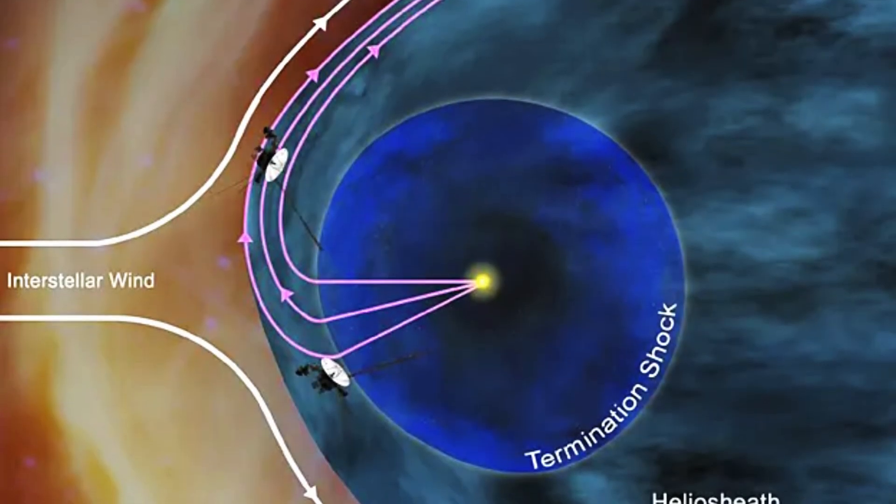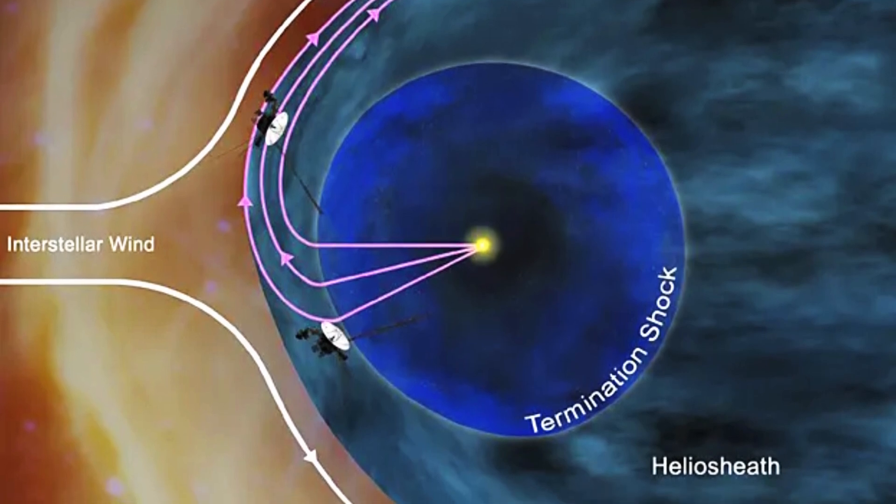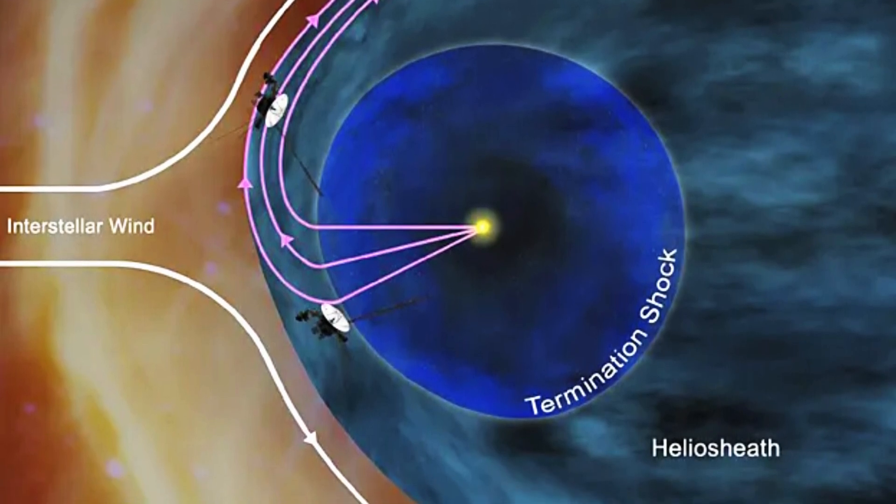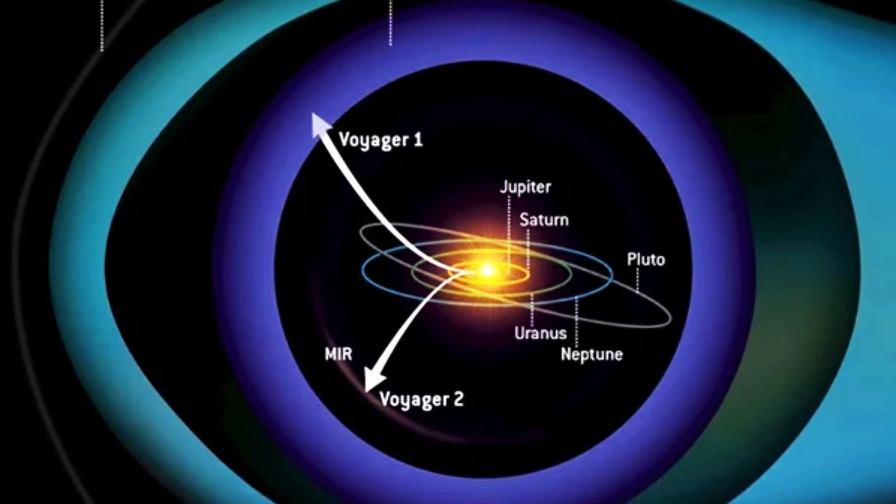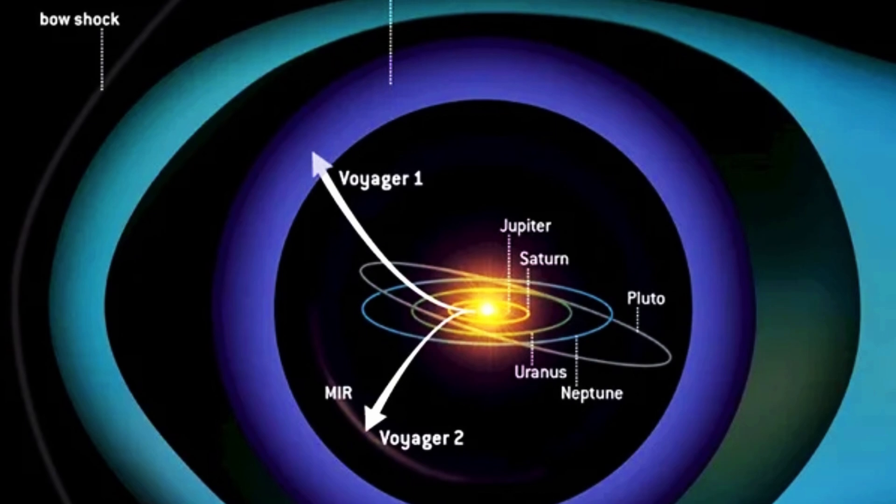However, these dynamic movements of the heliopause contradict existing models and remain unexplained. Similarly, discrepancies exist in the temperature and density of the solar wind near the heliopause.